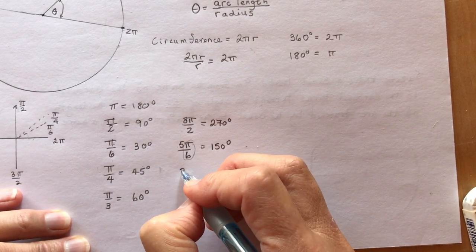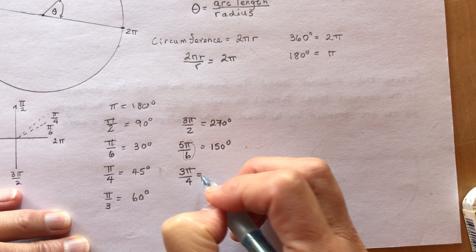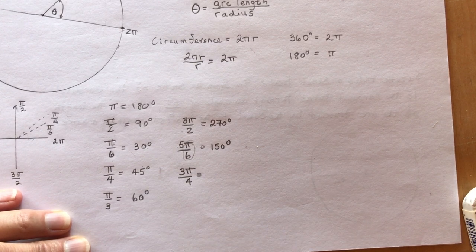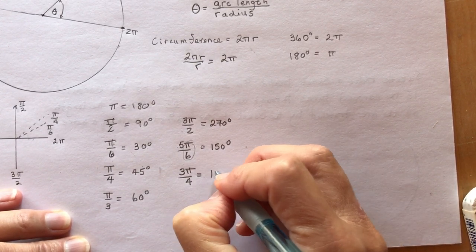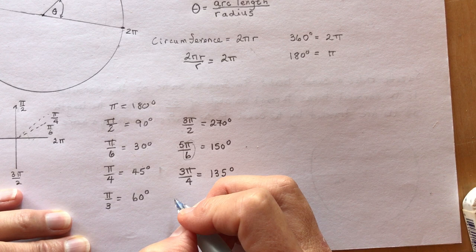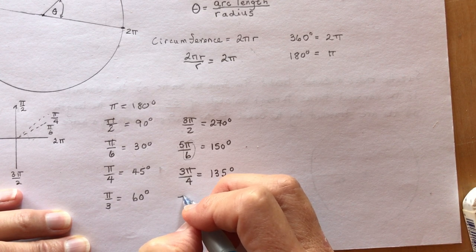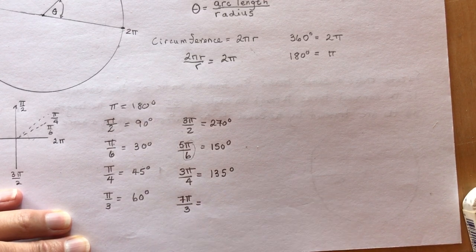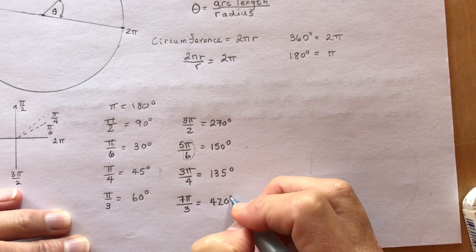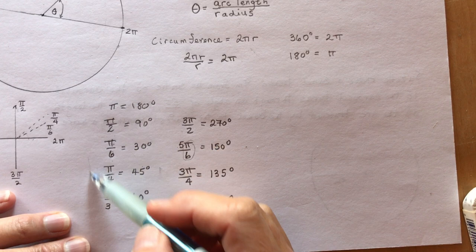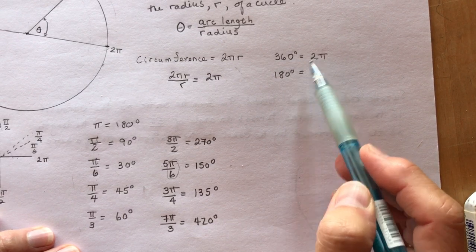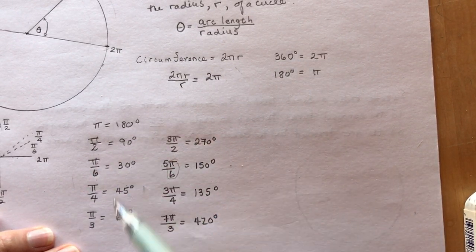What would 3π/4 be? If π/4 is 45, three times 45 is 135 degrees. And let's say I asked you what is 7π/3? Seven times 60 degrees is 420 degrees. So it's really easy if you know these basic ones.